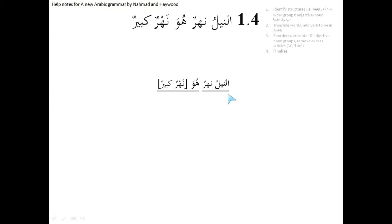In the first sentence, we first look at the first word. The first word is أَنِّيلُ, which is a noun. We can tell it's a noun because it has أَلِفْ لَام and a single ضَمَّة on the last letter. We can also tell from the meaning, because that's the Nile — which is a thing, so that's a noun.